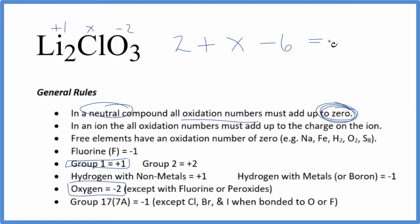All that's going to equal zero. So X minus four, that would equal zero. Add four to both sides. X equals a positive four. So the oxidation number on the chlorine in Li₂ClO₃, that's going to be plus four.